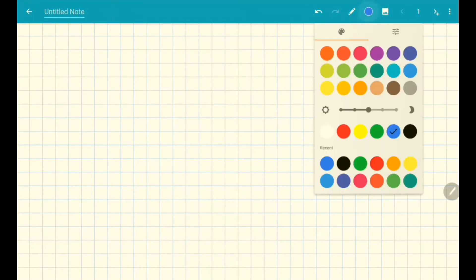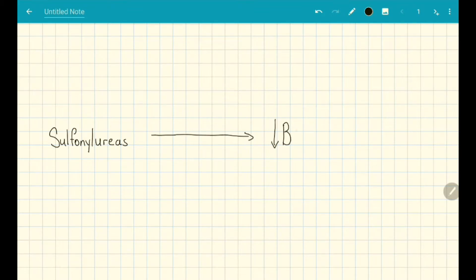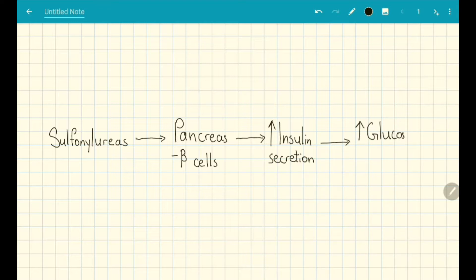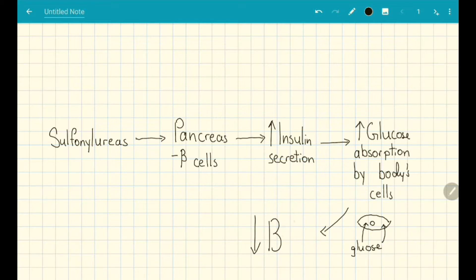So how exactly do sulfonylureas reduce blood sugar? Sulfonylureas act on the beta cells of the pancreas to increase insulin secretion. Insulin is a natural peptide hormone that promotes the absorption of glucose into our body cells, causing a reduction in blood glucose.